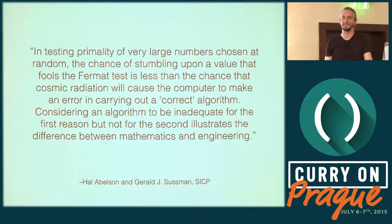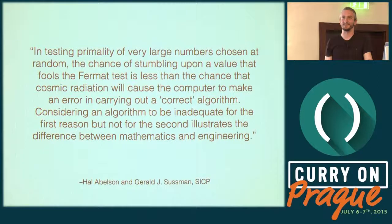I'm not normally one to read from my own slides, however I really like this quote from the Structure and Interpretation of Computer Programs: "In testing primality of very large numbers chosen at random, the chance of stumbling upon a value that fools the Fermat test is less than the chance that cosmic radiation will cause a computer to make an error in carrying out a correct algorithm. Considering an algorithm to be inadequate for the first reason but not for the second illustrates the difference between mathematics and engineering." It's obviously tongue-in-cheek, but I think it makes a good point.